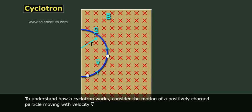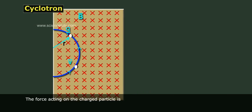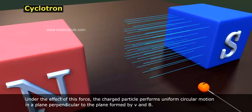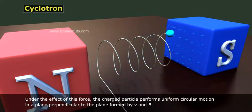To understand how a cyclotron works, consider the motion of a positively charged particle moving with velocity v and entering perpendicularly a uniform magnetic field of intensity B as shown in the figure. The force acting on the charged particle is F equals Q v cross B equals Q v B sine theta equals Q v B since sine theta equals pi by 2. Under the effect of this force, the charged particle performs uniform circular motion in a plane perpendicular to the plane formed by v and B.